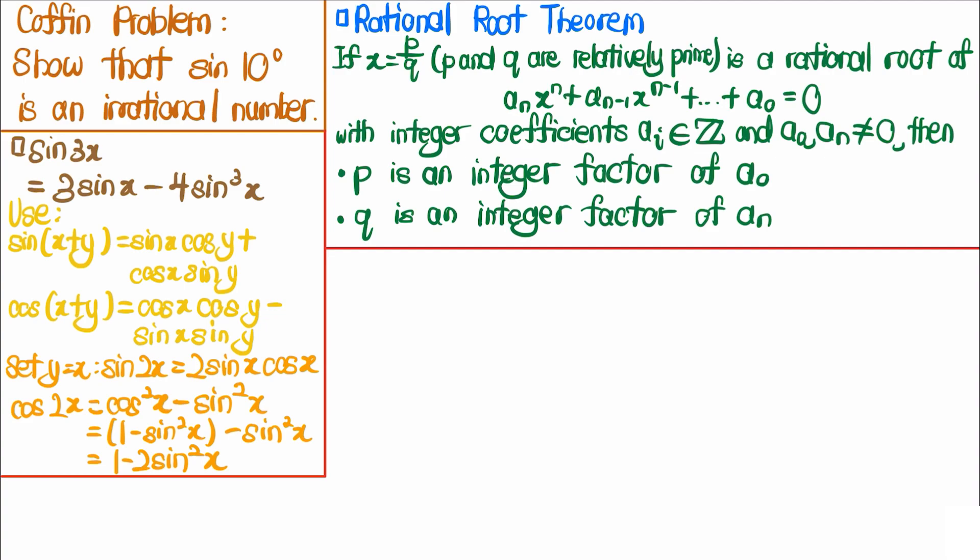The second thing we need is the well-known triple angle identity, which states that sine of 3x equals 3 times sine x minus 4 times sine x to the power of 3. To prove this triple angle identity, we'll use the traditional angle summation formula for sine and cosine.